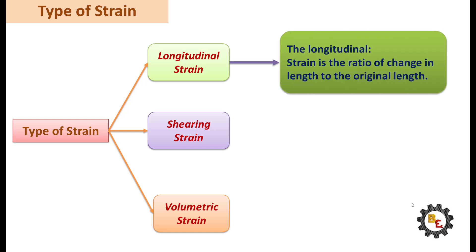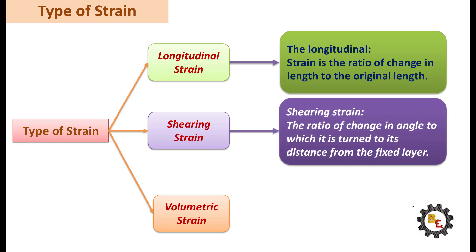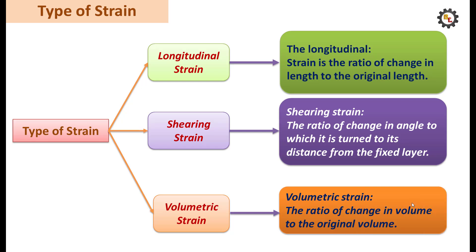Longitudinal strain is the ratio of change in length to the original length. Shear strain is the ratio of change in angle to the fixed layer. Volumetric strain is the ratio of change in volume to the original volume.